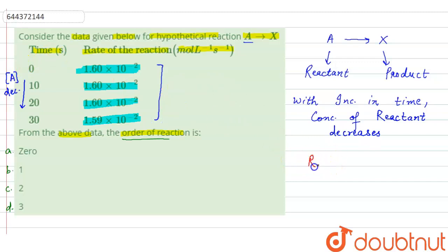Now, we know that rate of reaction, if we write down general equation, rate of reaction is equal to K into concentration of A raised to the power n. Where K is the rate constant n, tells about the order of reaction.